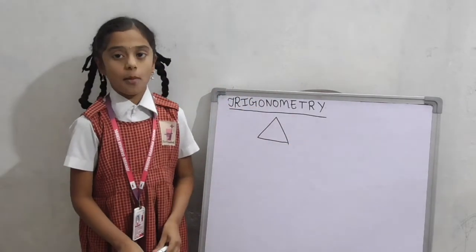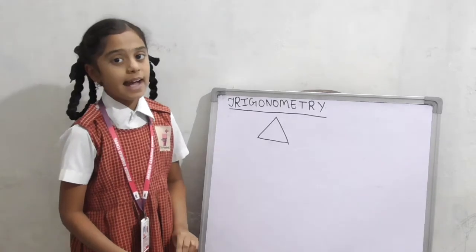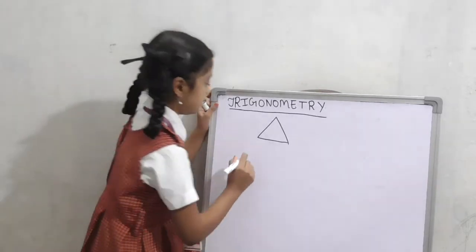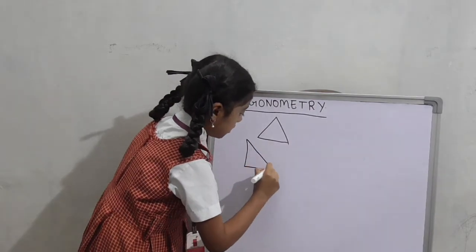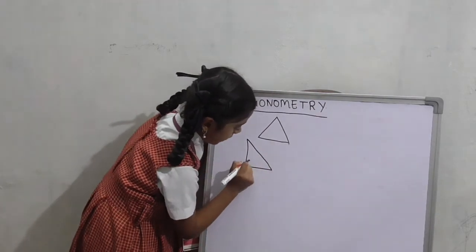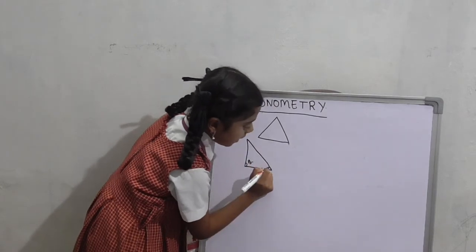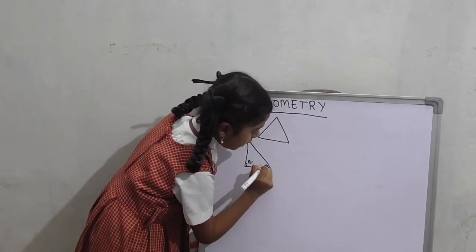In basic trigonometry, we use right angle triangle. This is 90 degrees. This angle is called theta.